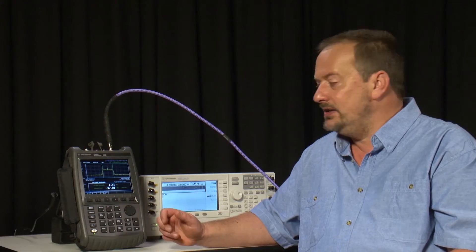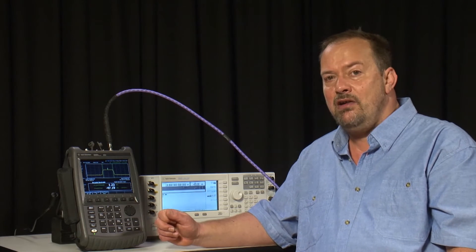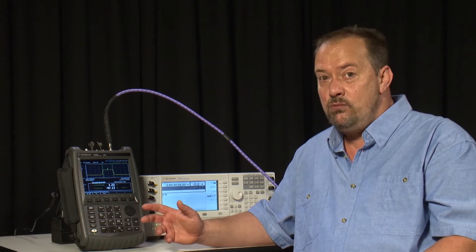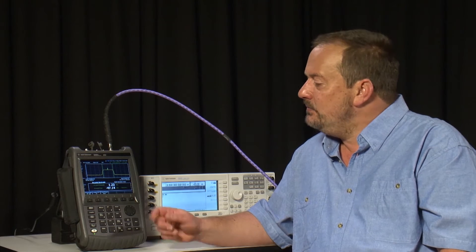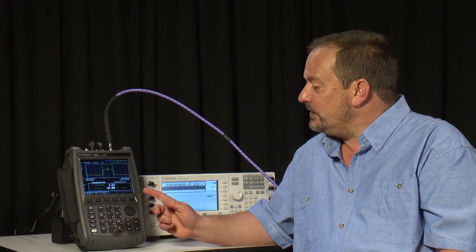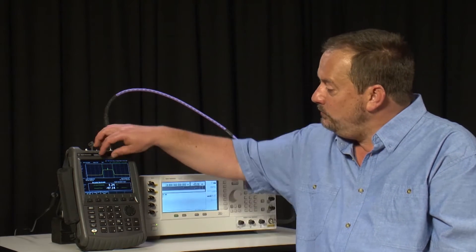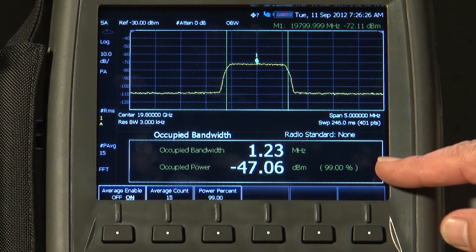Occupied bandwidth is very similar to channel power, but whereas with channel power we tell the FieldFox within what bandwidth we want it to measure the RF power, with Occupied bandwidth, the FieldFox automatically calculates within what bandwidth 99% of the power is contained.